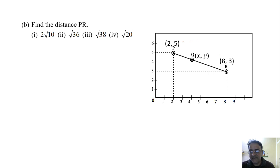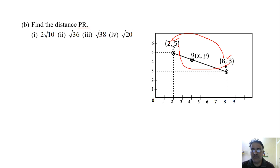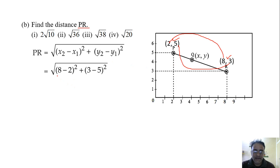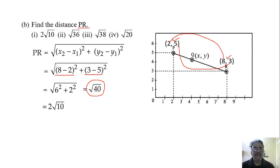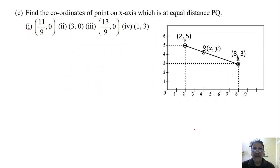Find the distance PR. We already have the coordinates of P (2, 5) and R (8, 3), so we'll use the distance formula. We get √[(8−2)² + (3−5)²] = √[36 + 4] = √40 = √(4×10) = 2√10. So the correct option is the first one.